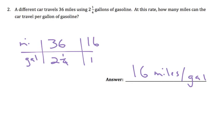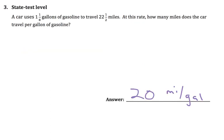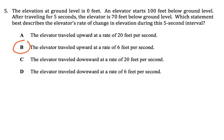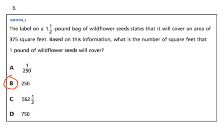Number 2 was 16 miles per gallon. Number 3 was 20 miles per gallon. Number 4 is probably kind of tricky, but it's 50 cents per square foot. Number 5, also a little tricky, elevator traveled upward at a rate of 6 feet per second. And then number 6, the answer was 250 square feet per pound.